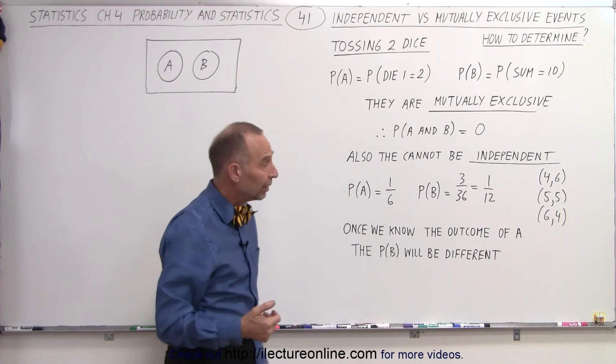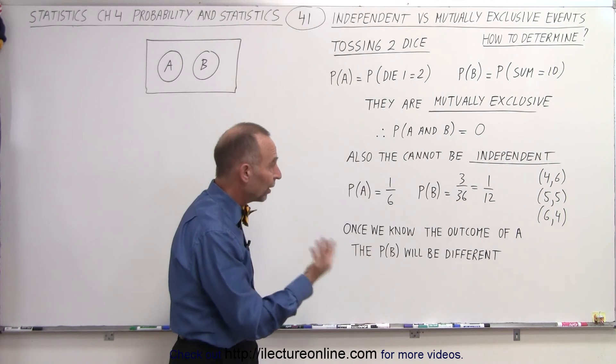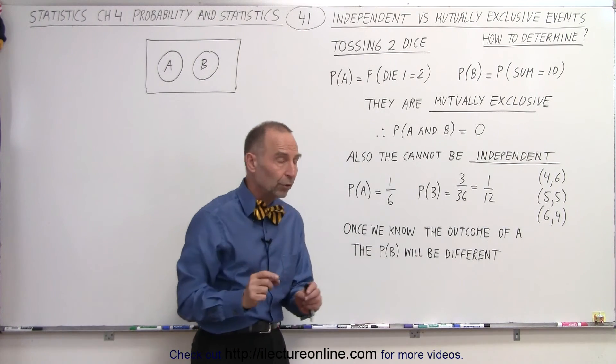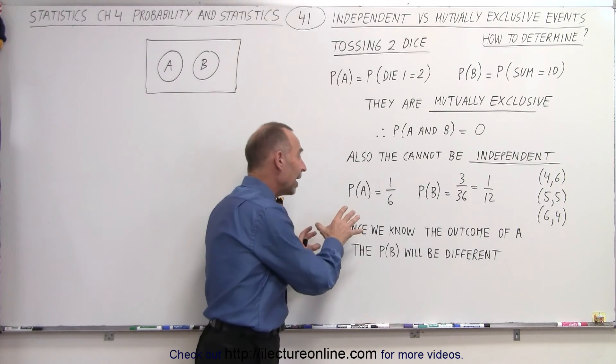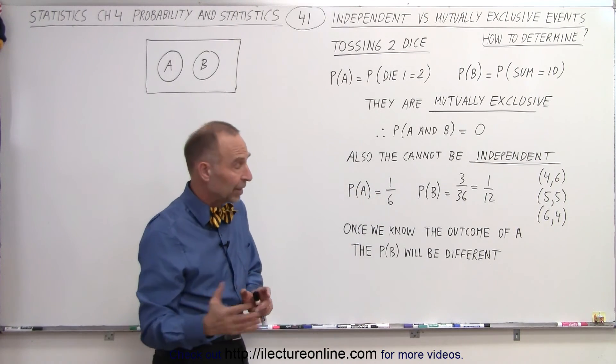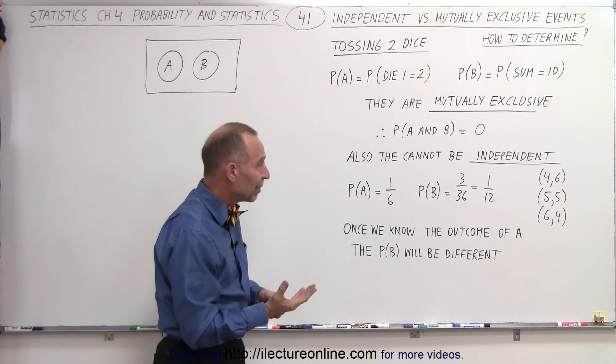when we throw die 1, then there's a 1 out of 6 probability that we'll get a sum of 10. But in other words, once we know the outcome of A, if A, for example, is 3 or less, then there's no probability that we'll get B, then the probability of B will be 0.